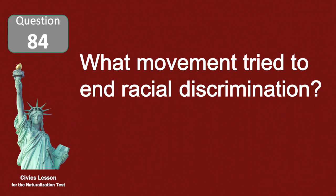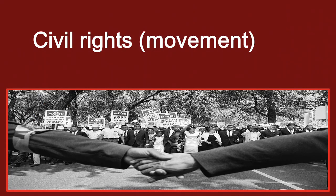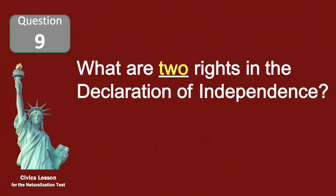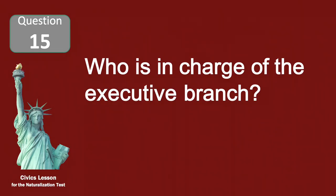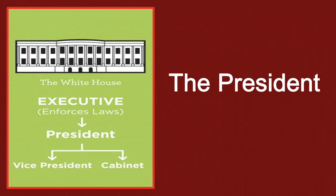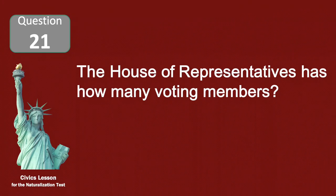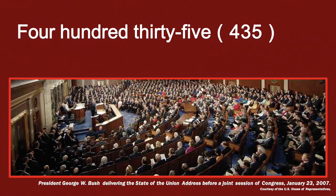What movement tried to end racial discrimination? Civil rights. What are two rights in the Declaration of Independence? Life and liberty. Who is in charge of the Executive Branch? The President. The House of Representatives has how many voting members? 435.